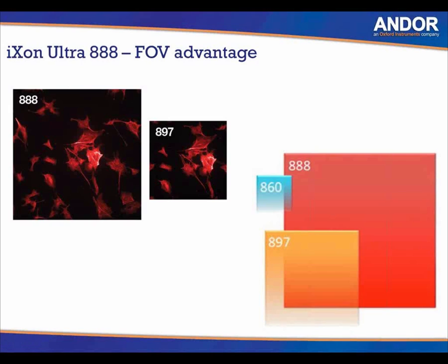In terms of field of view, this shows the difference between the three different chips or sensors: the large-format 888, the 897, and the 860. The 860 is the smallest sensor with the largest pixels.